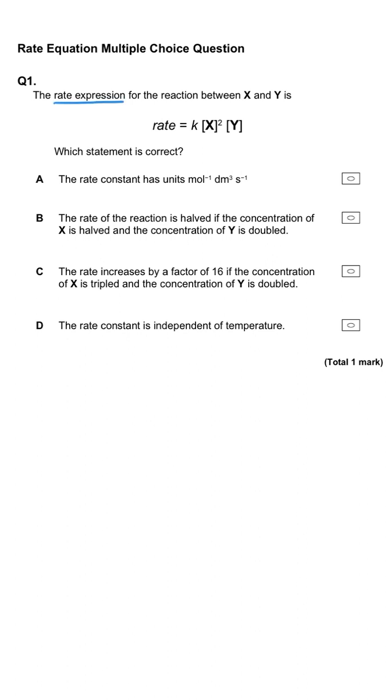The rate expression for the reaction between X and Y is shown here. Which statement is correct? The rate constant has units of mol⁻¹ dm³ s⁻¹.